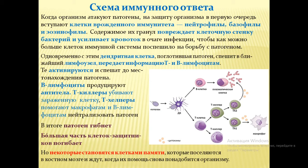Т-киллеры убивают заражённую клетку, Т-хелперы помогают макрофагам и B-лимфоцитам нейтрализовать патоген. Разворачивается целое поле боя: борьба с бактериями, вирусами. В итоге патоген чаще всего гибнет, но при этом погибает и большая часть клеток иммунной системы. Некоторые клетки остаются и становятся клетками памяти, которые помогают организму быстрее отвечать на подобный антиген.